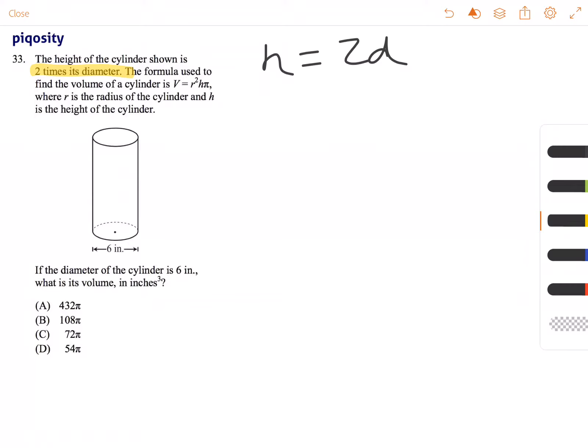The formula used to find the volume of a cylinder is V equals r squared times h times pi, where r is the radius of the cylinder and h is the height of the cylinder.